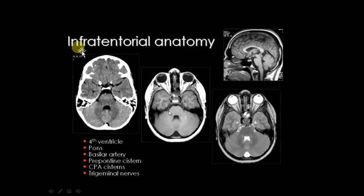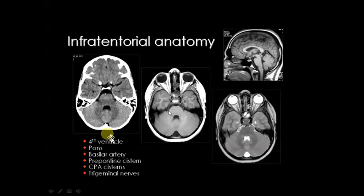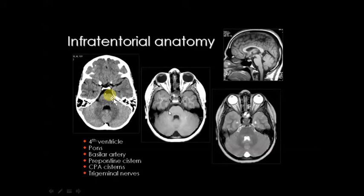In the infratentorial CT anatomy, we can find the fourth ventricle here. In front of the fourth ventricle is the pons, and then the basilar artery. You can see the basilar artery on CT — just in front of the pons there is a small white round structure, this is the basilar artery. The right and left vertebral arteries join to form the basilar artery, which continues upward. The basilar artery is a very important structure for neuroanatomy.